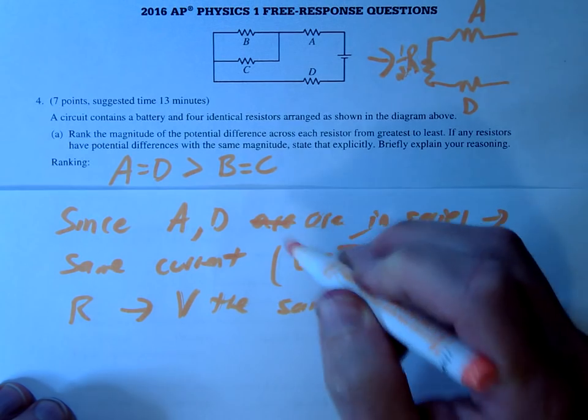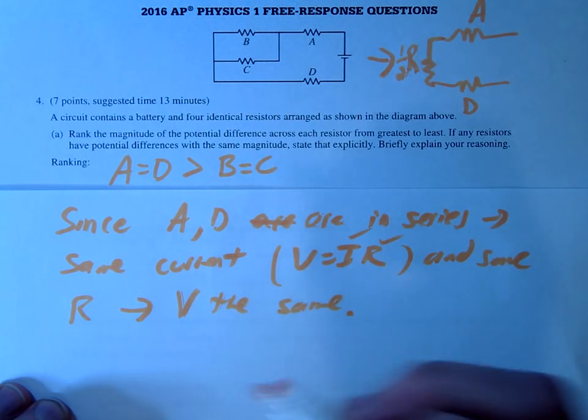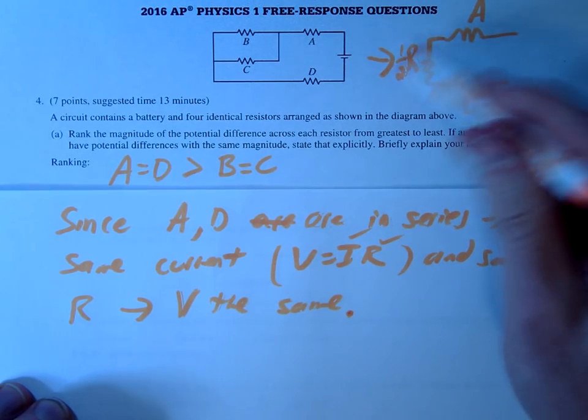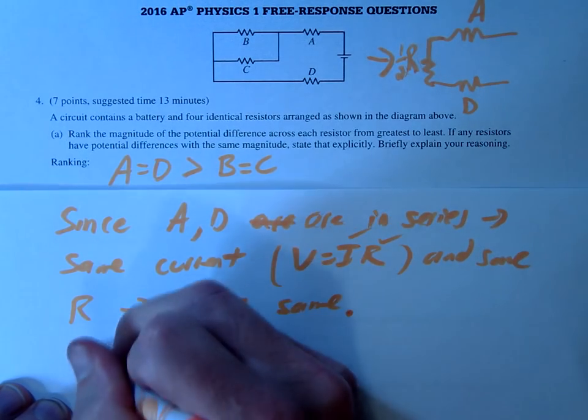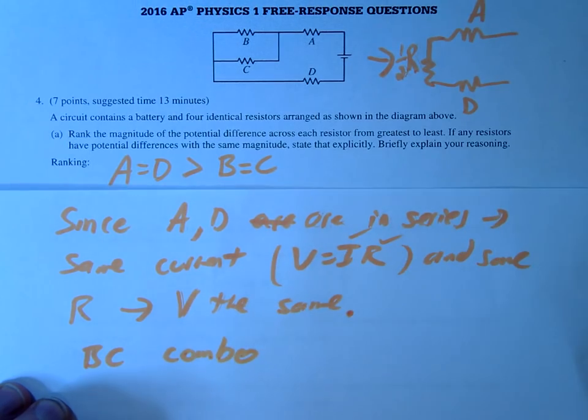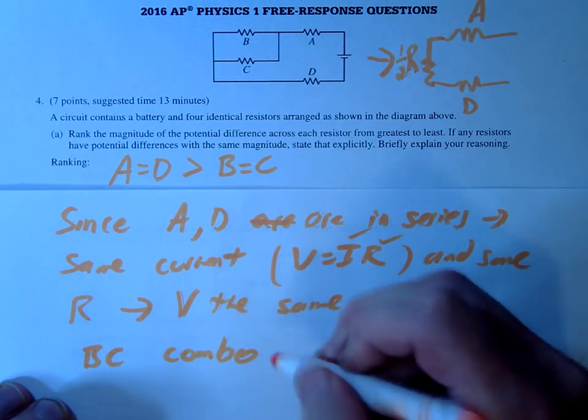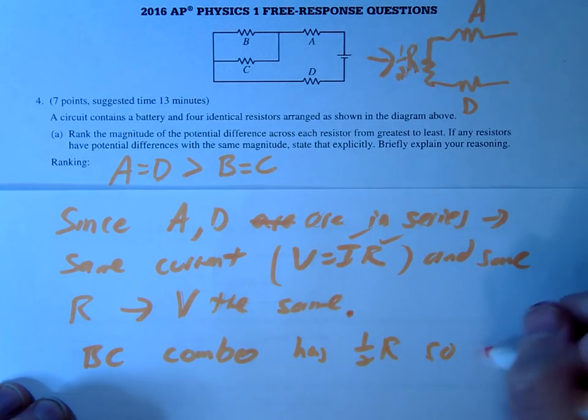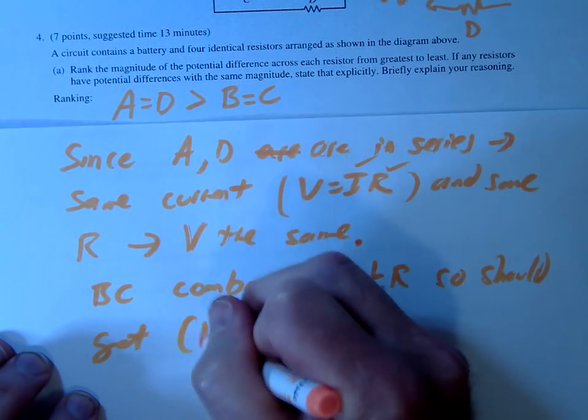Okay. B and C are also in parallel. So, actually, let's answer why it's greater. So the BC combo has half the resistance, so should get V equals IR, right? If R is one half, and the current's the same, they should get half the voltage.